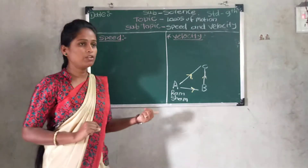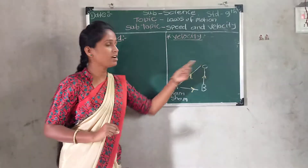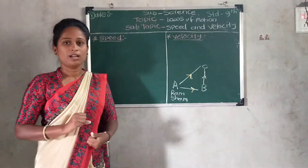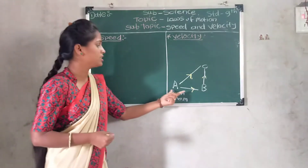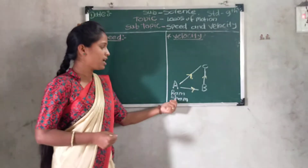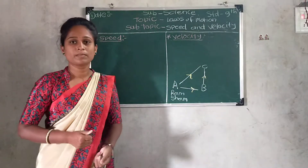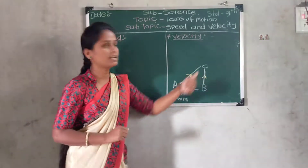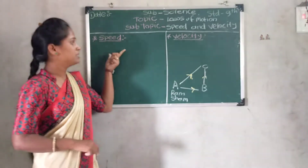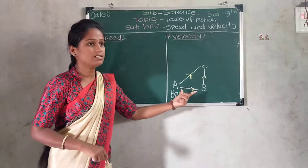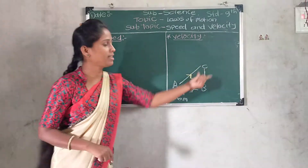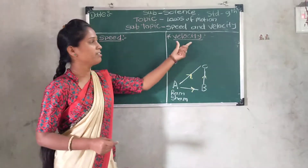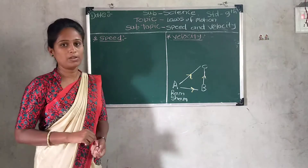Velocity is displacement covered per unit time. Speed is distance covered per unit time. So: distance covered per unit time is speed, and displacement covered per unit time is velocity.